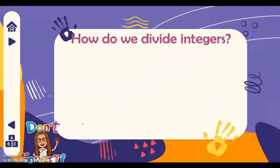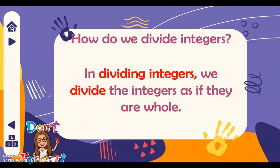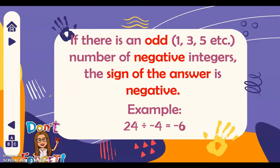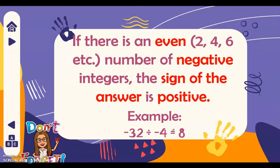Next is dividing integers. In dividing integers, we divide the integers as if they are whole numbers. If there is an odd number of negative integers, the sign of the answer is negative. Example: 24 divided by negative 4 — we divide 24 by 4, which is 6, and there is only one negative integer, which is odd, therefore the sign of the answer is negative. This rule is the same as multiplication. If there is an even number of negative integers, the sign of the answer is positive. For example, negative 32 divided by negative 4 — we divide 32 by 4, which is 8, and there are two negative integers, which is even, therefore the sign of the answer is positive.